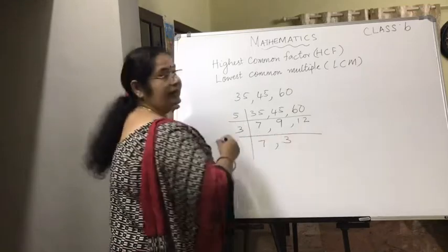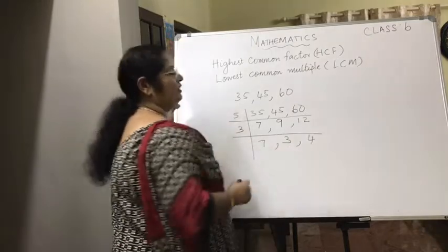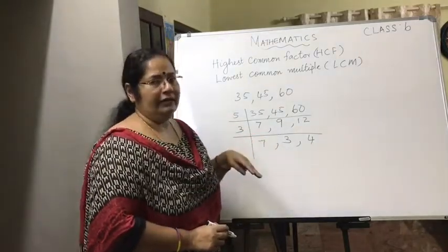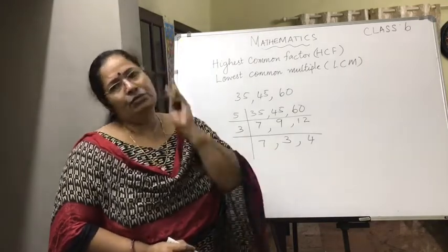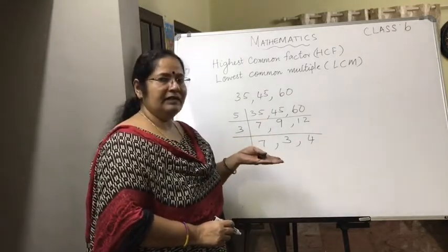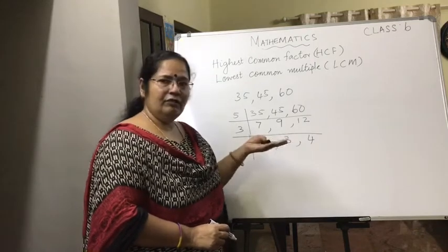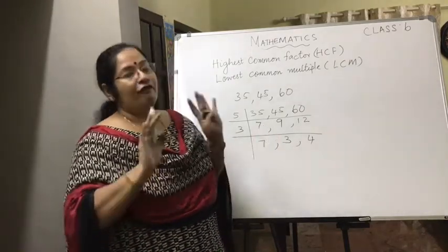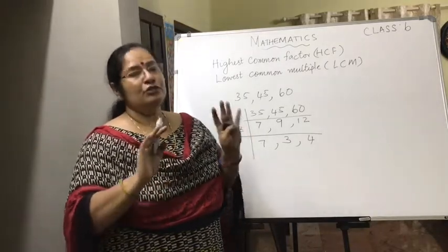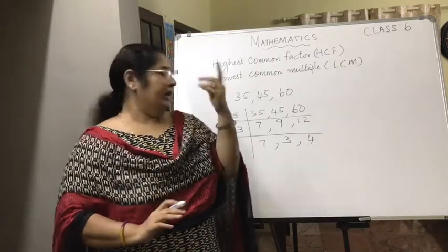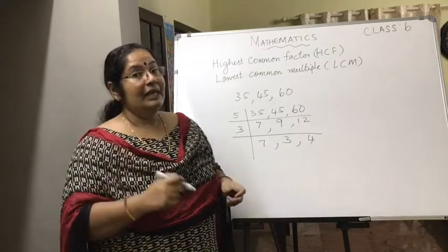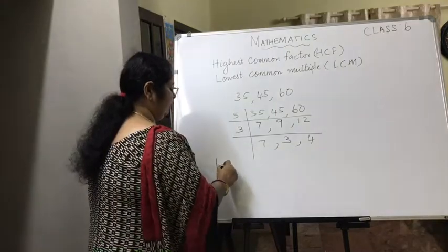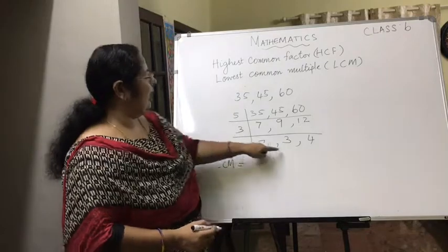Now we have 7, 3, and 4. Checking all possible pairs: 7 and 3, 3 and 4, 4 and 7 — none of these pairs share a common divisor. So we cannot find a number by which at least 2 of them are divisible, and we stop the division here.